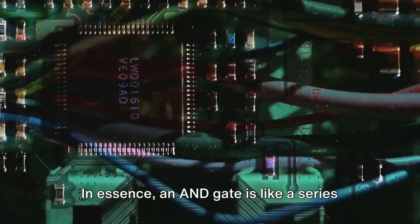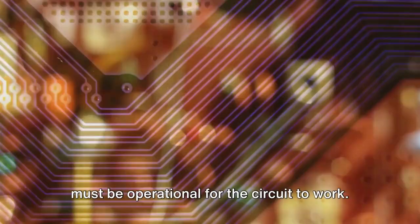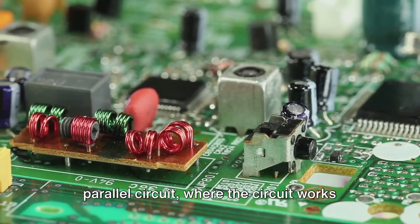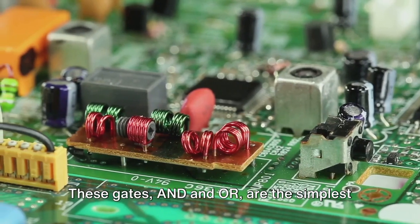In essence, an AND gate is like a series circuit in electronics, where all elements must be operational for the circuit to work. On the other hand, an OR gate is like a parallel circuit, where the circuit works as long as one element is operational.